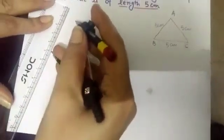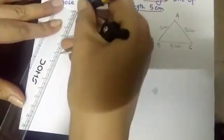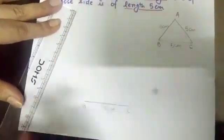I have taken this base, BC, as 5 cm with the help of ruler. Now, again this side is also 5 cm. This side is also 5 cm. So you have to open your compass with the help of ruler 5 cm.